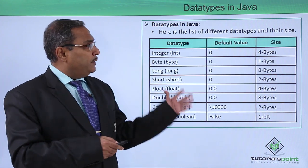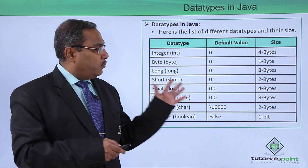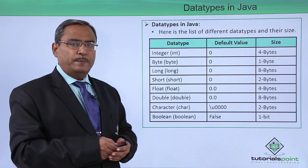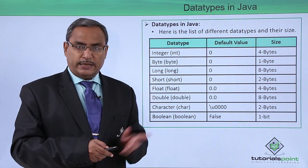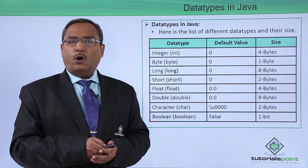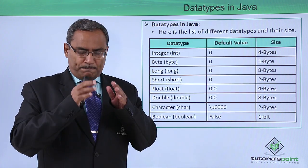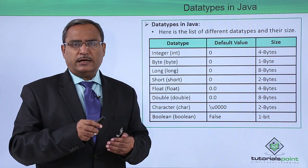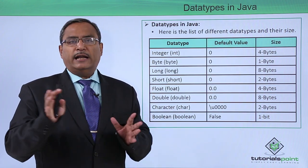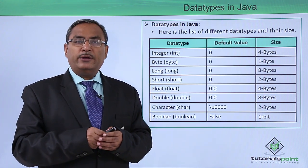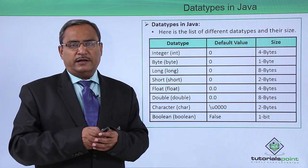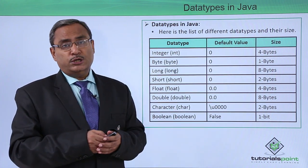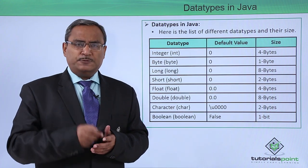In this way, we have defined all the different data types available, and all the data types discussed in this slide are primitive data types. To summarize: Java data types are divided into two categories — primitive data types, which are pre-known to Java, and non-primitive data types, where you can have classes, arrays, and other user-defined types. Thanks for watching this video.